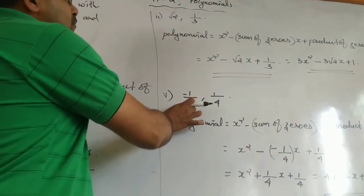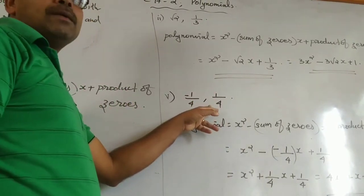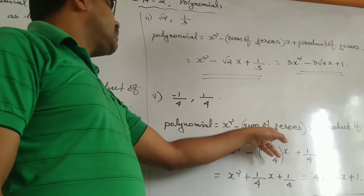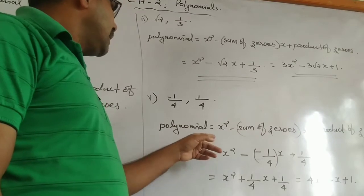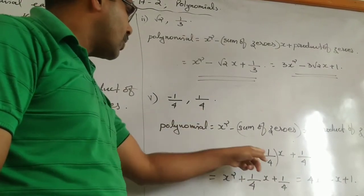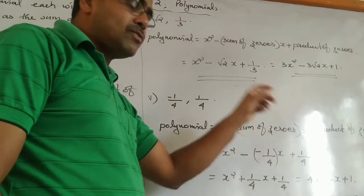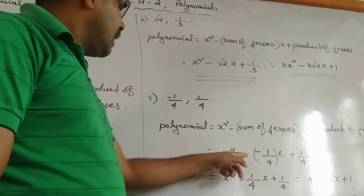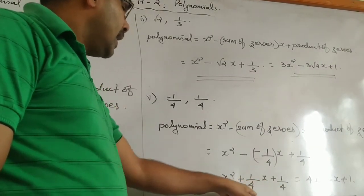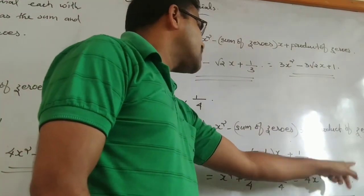Question 3: sum of zeros = −1/4, product of zeros = 1/4. Polynomial = x² − (−1/4)x + 1/4 = x² + (1/4)x + 1/4. Taking LCM as 4: 4x² + x + 1.